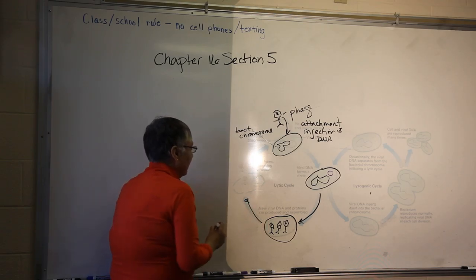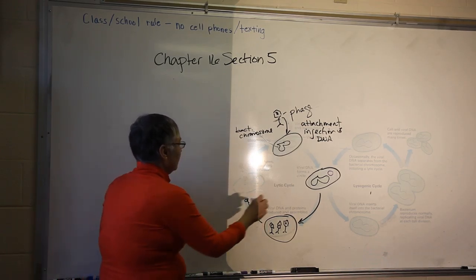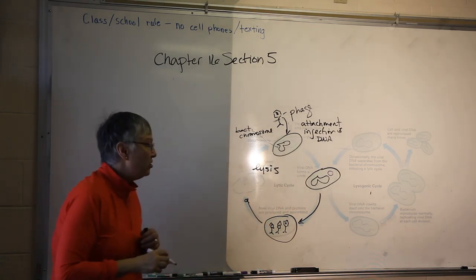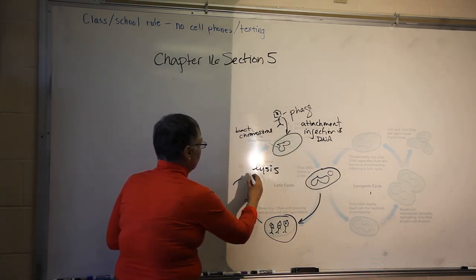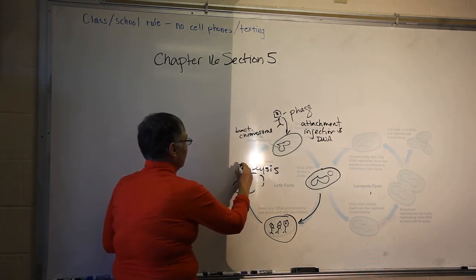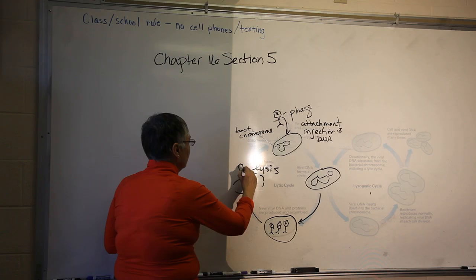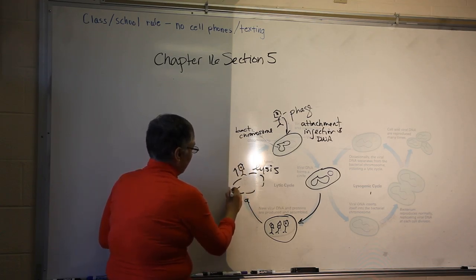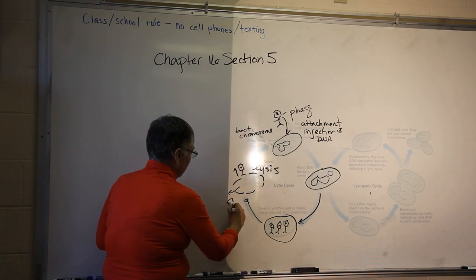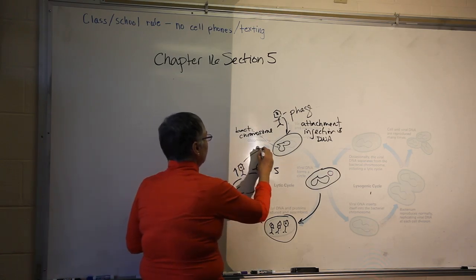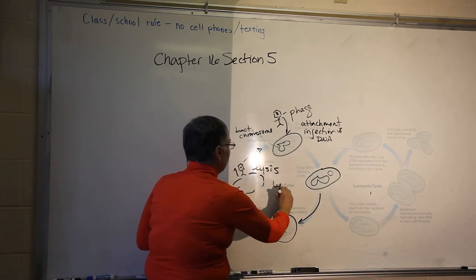The next step: we're going to get lysis of the bacterial cell. The bacterial cell is torn apart, the viral particles are released, and they can infect other cells. This is called the lytic cycle.